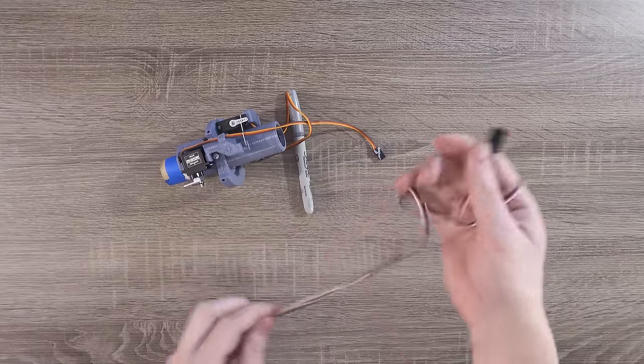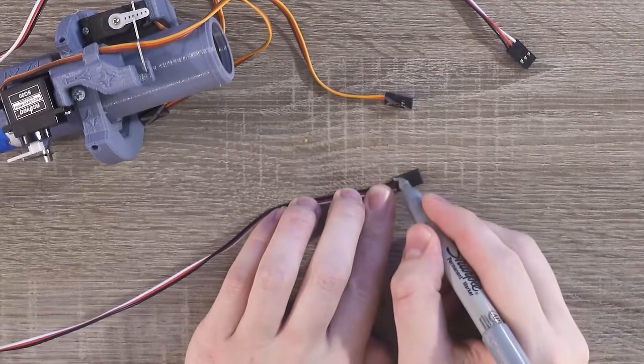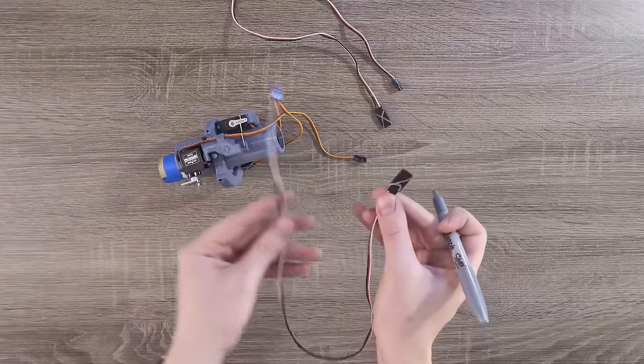We need to do the same thing on the TVC extension cables that come with the kit. Each cable, on both ends and on both sides, should be labeled X or Y.